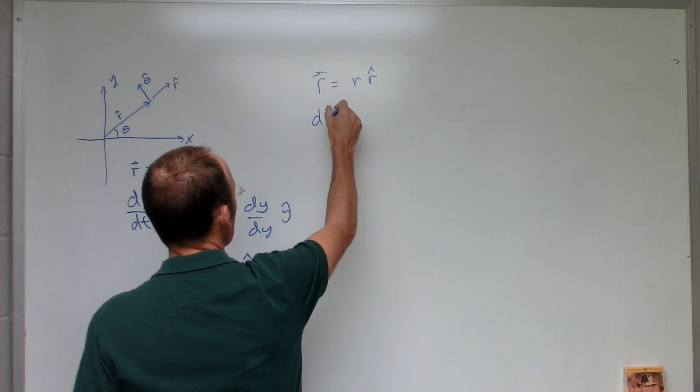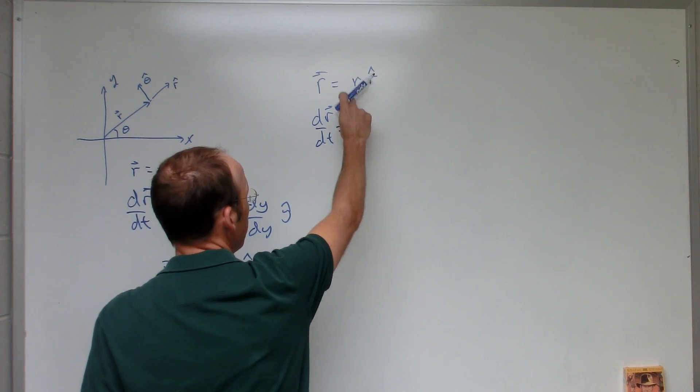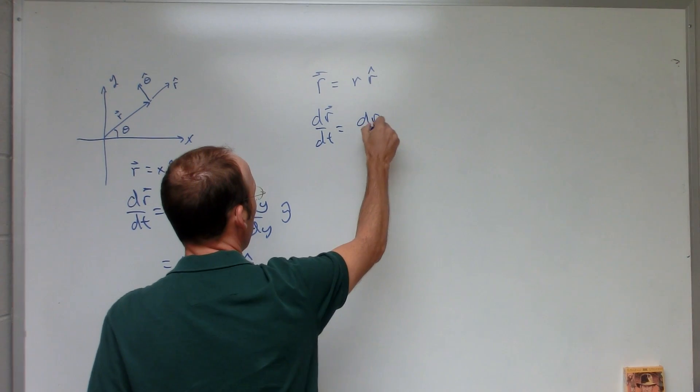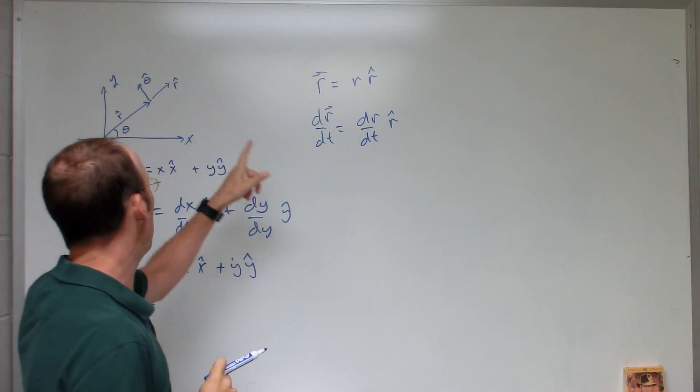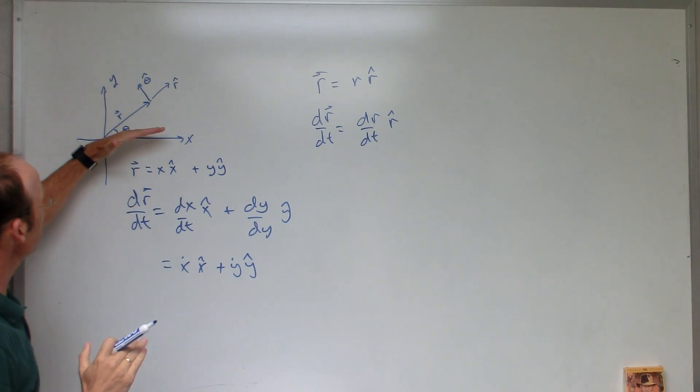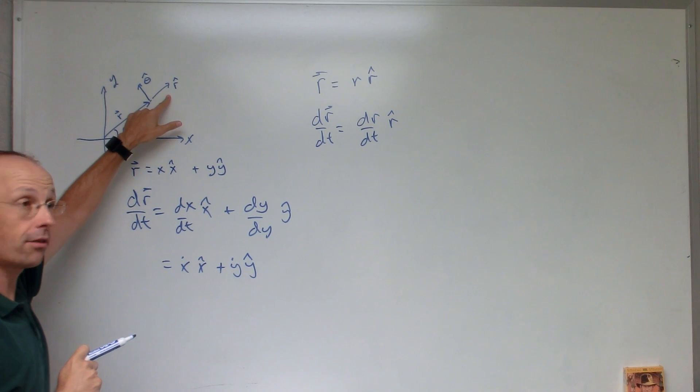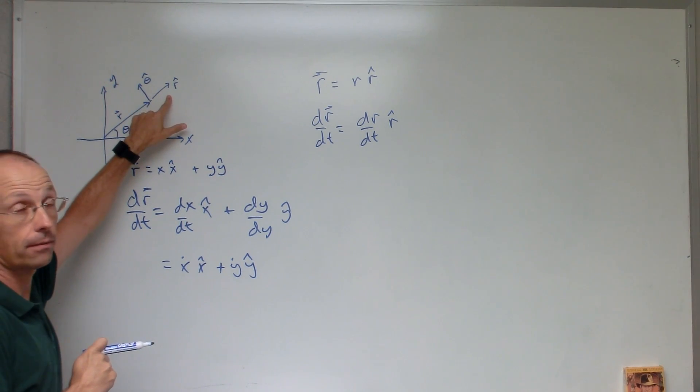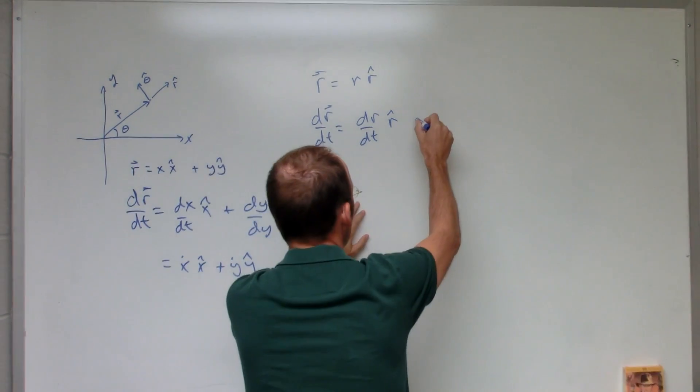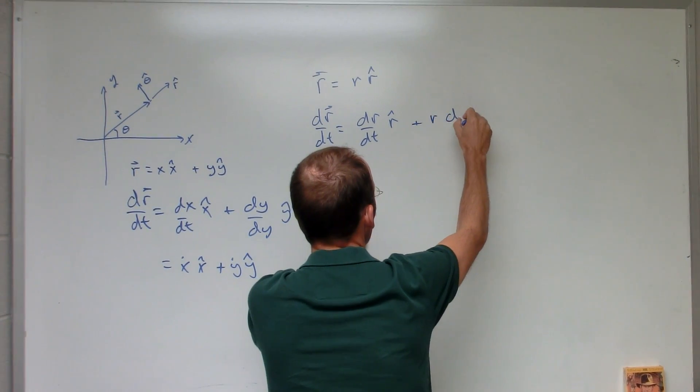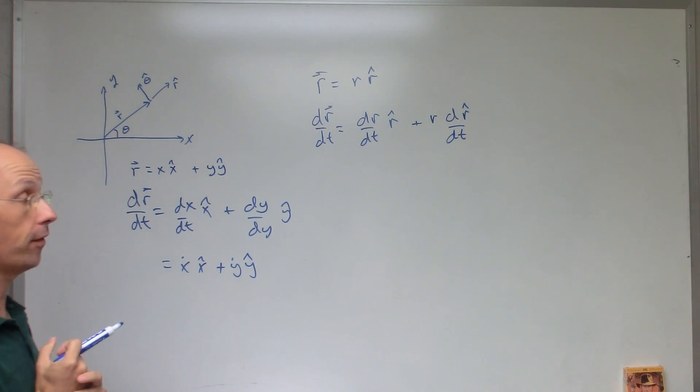The derivative of r with respect to t. Now I'm going to do the same thing. It's going to be dr/dt r hat. But now, as my point moves, r is not in the same direction, and so r hat is not in the same direction. So r hat is not constant. So I need to also add in plus r dr hat/dt. That's my derivative.